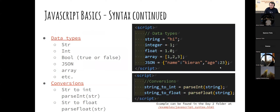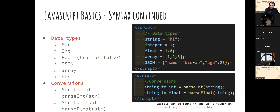Basic data types are essentially the same as Python, just with slightly different methods. The main new one is JSON, which is like a Python dictionary. For example, JSON of 'name' gives you 'Kieran', and JSON of 'age' gives you 23. If you need to convert strings to integers or floats, you can use parseInt or parseFloat.